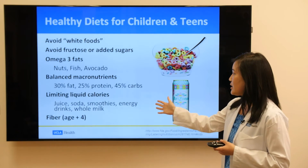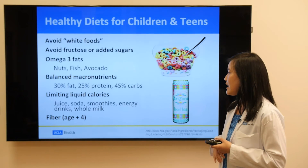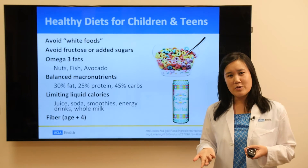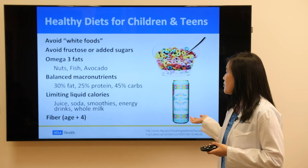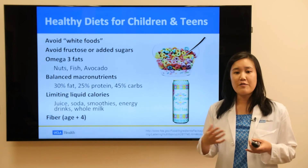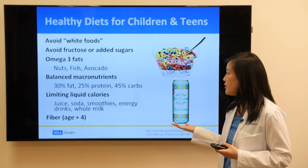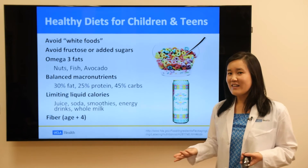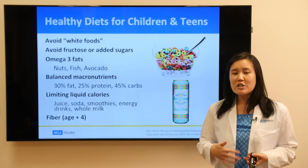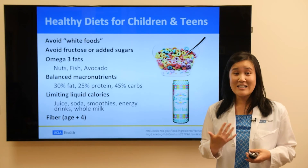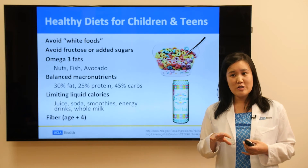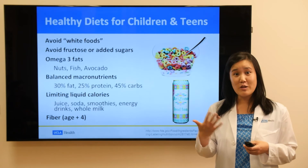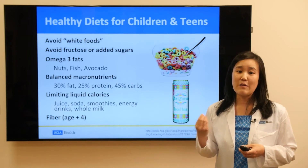I also recommend limiting liquid calories. Juice, soda, smoothies, energy drinks, and whole milk often have a lot of calories that children can drink very fast, making up a large portion of their daily caloric intake. Many of these drinks don't have fiber to slow down digestion — drinking a glass of orange juice is not the same as eating an actual orange. Make sure patients are getting enough fiber. Adults should aim for 20 to 30 grams per day. For younger children, I use the formula: their age plus four equals the number of grams to aim for per day.